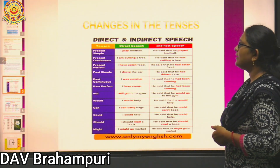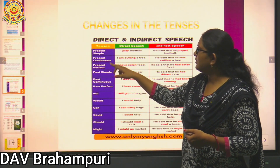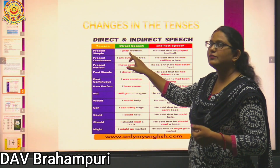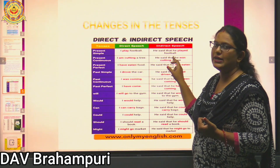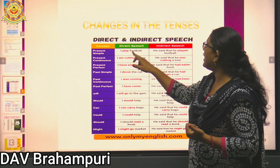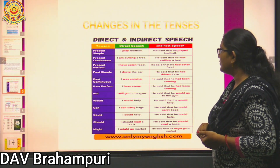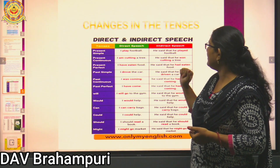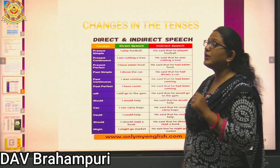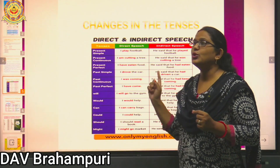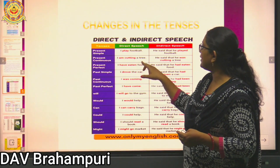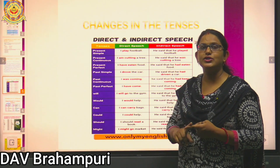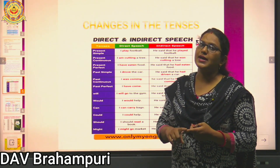Detailed tense changes: If the reported speech is in simple present, it changes to simple past — 'I play football' becomes 'he said that he played football,' using the second form of the verb. If the reported speech is in present continuous, it changes to past continuous — 'I am cutting a tree' becomes 'he said that he was cutting a tree.' The structure of past continuous is: subject + was/were + verb-ing + object.